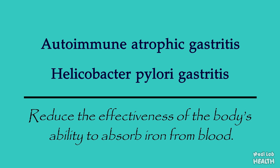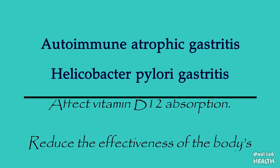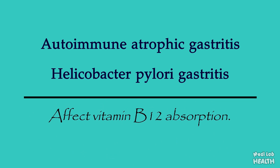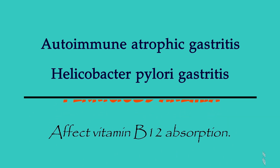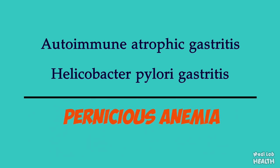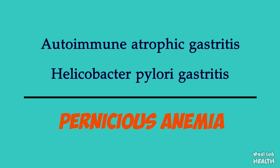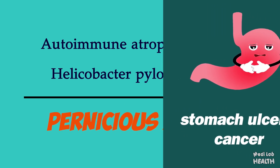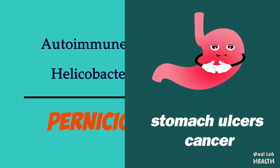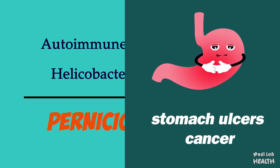In autoimmune atrophic gastritis, vitamin B12 absorption can also be affected. Both types can develop into pernicious anemia. Gastritis can also increase the risk of other gastrointestinal conditions such as stomach ulcers and cancer.